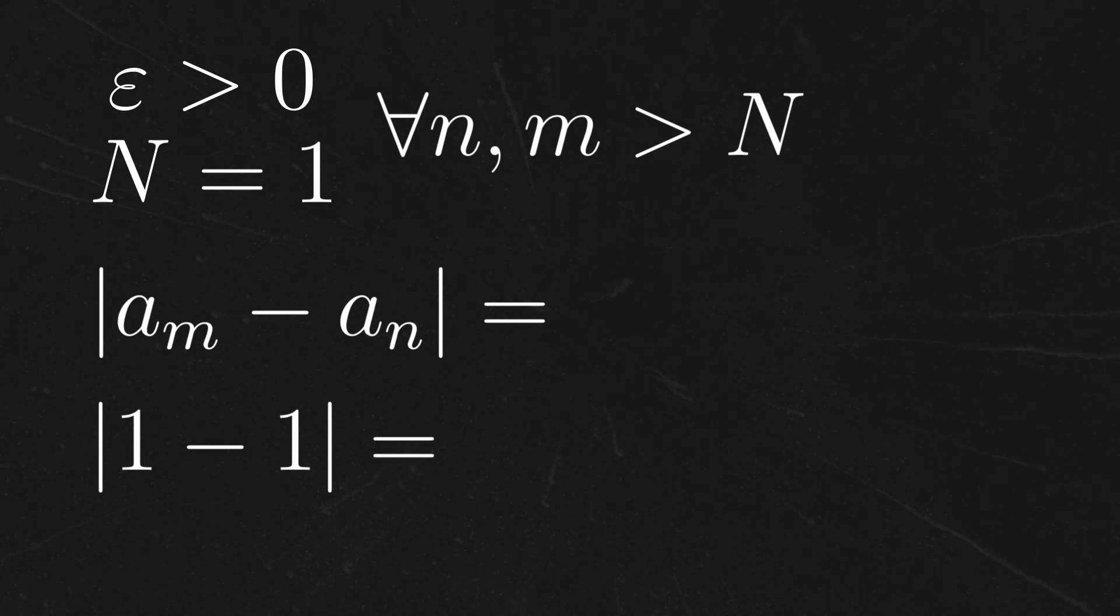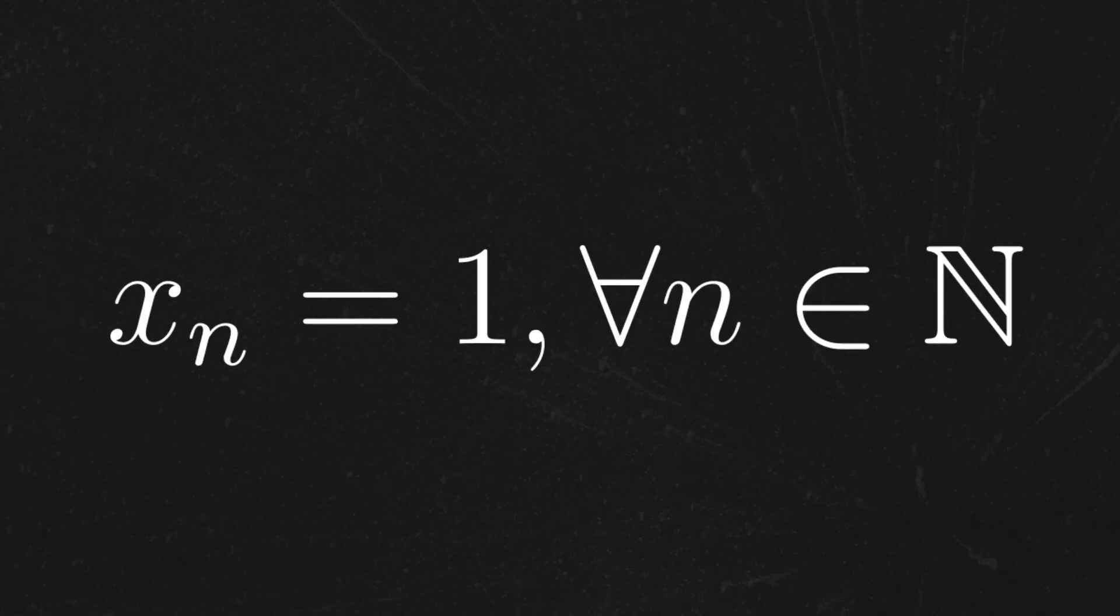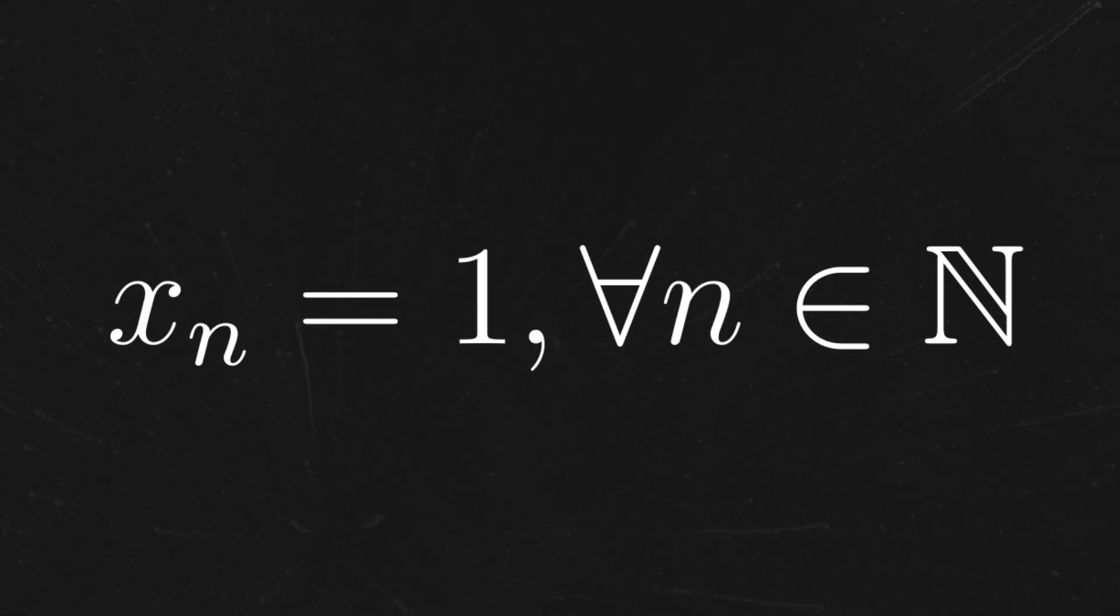which is the absolute value of zero, which is zero, and that is less than epsilon. Therefore, the sequence defined by a sub n equal to one for all little n a natural number is Cauchy.